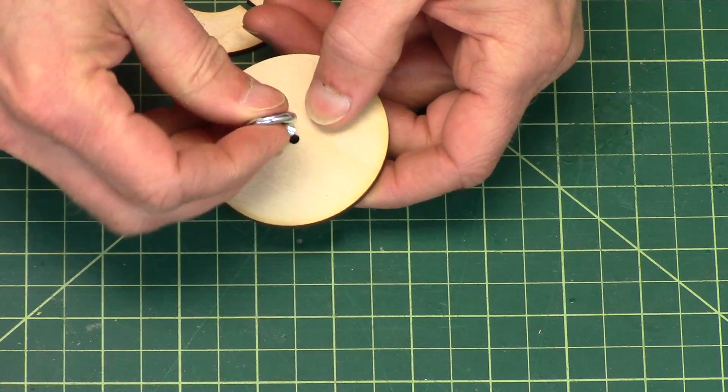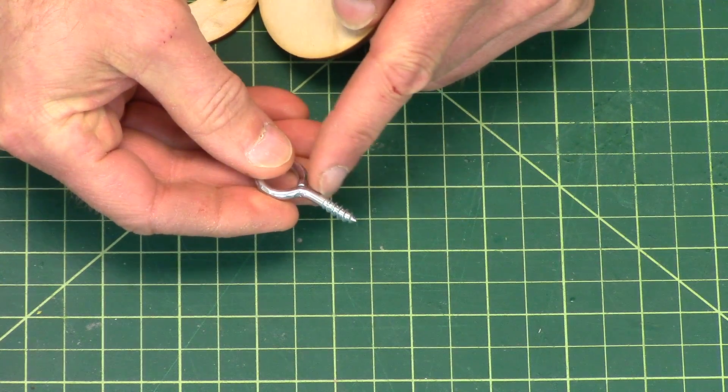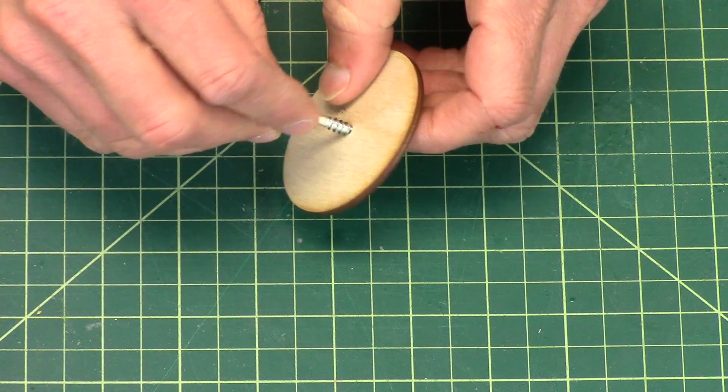Go ahead and screw these in. When you screw them in, don't go all the way up onto the shank of the screw eye. Stay on the threads as you're going through the hole.